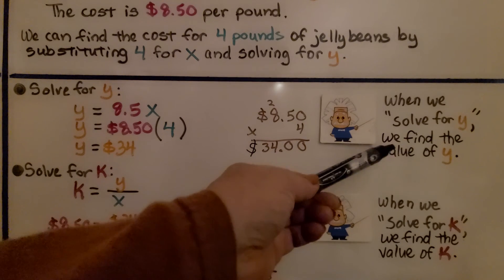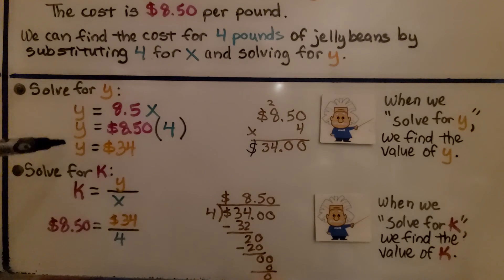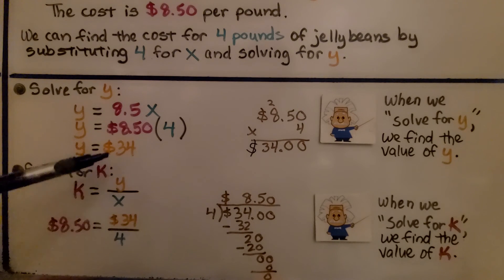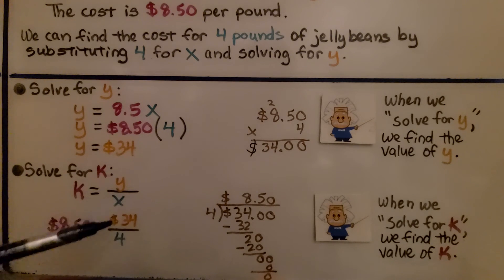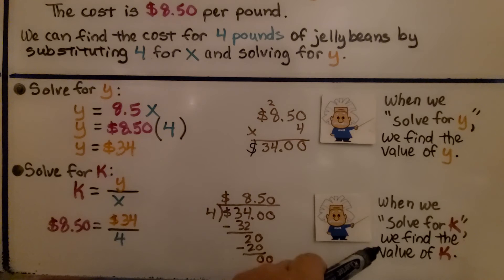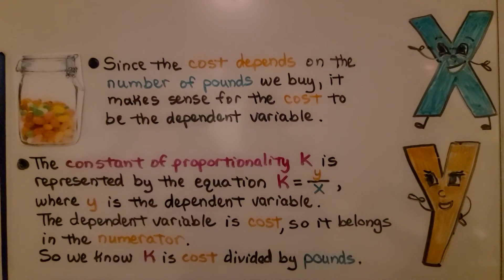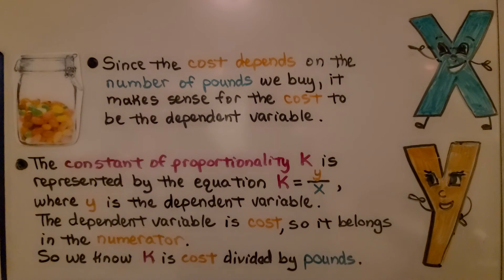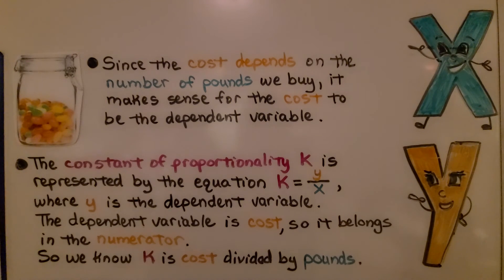To solve for k, we use k = y divided by x. If y is $34 and x is 4, then 34 divided by 4 gives us $8.50. Since the cost depends on the number of pounds we buy, cost is the dependent variable and belongs in the numerator. So k equals cost divided by pounds.